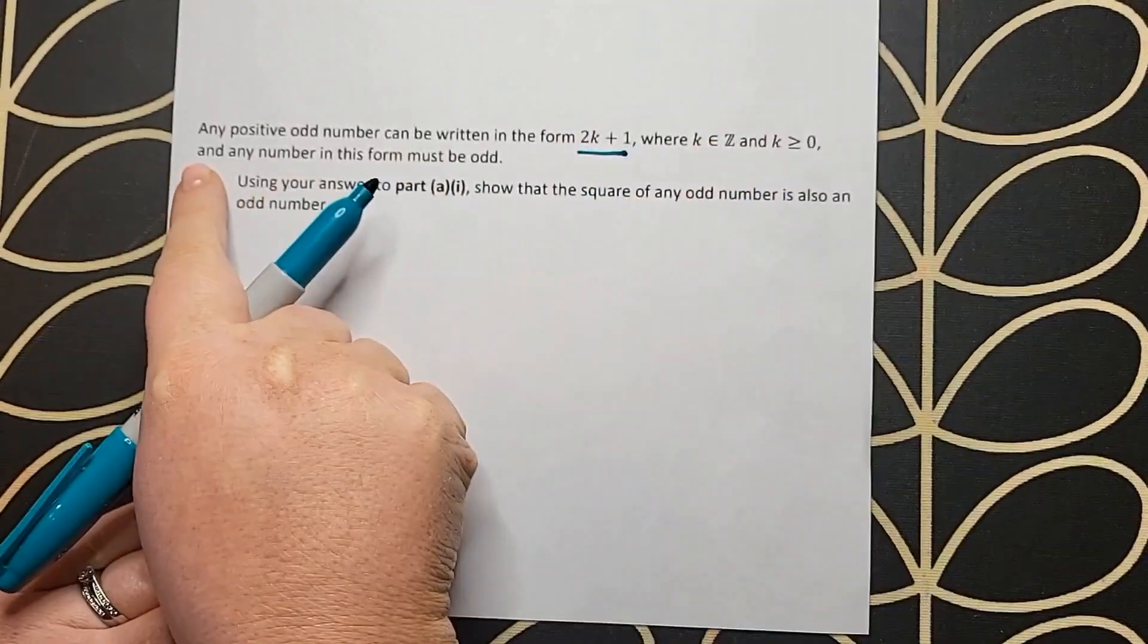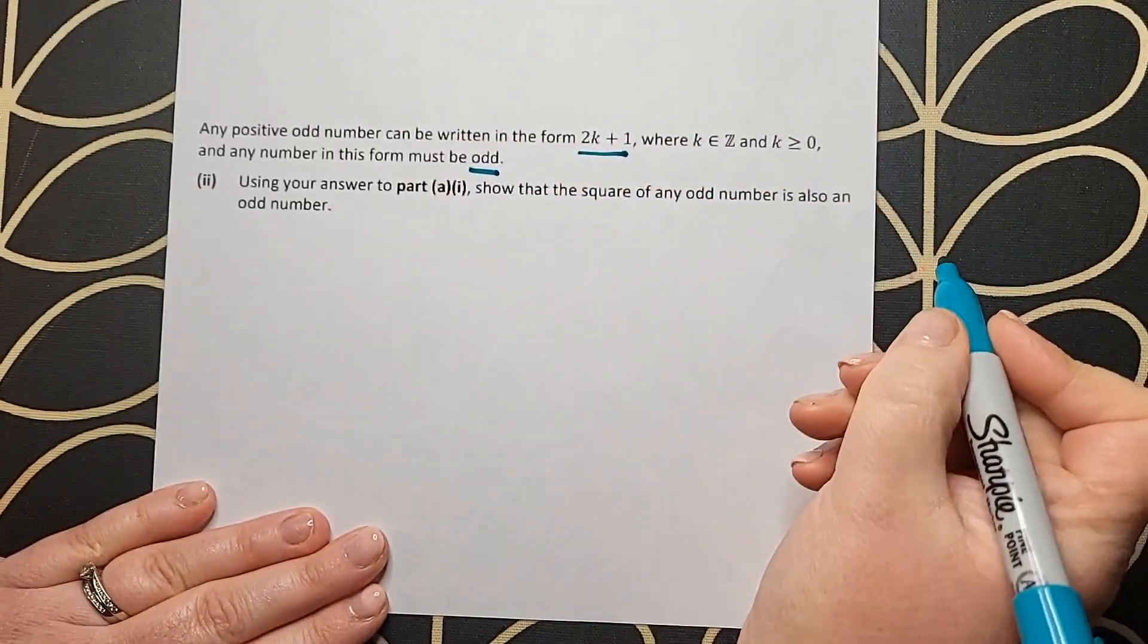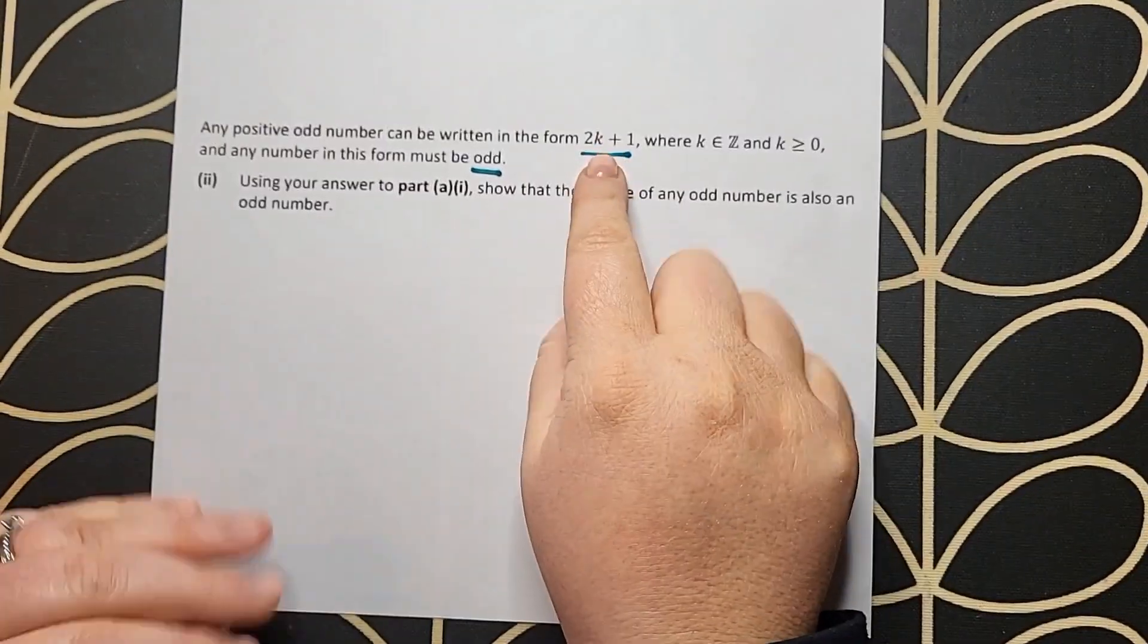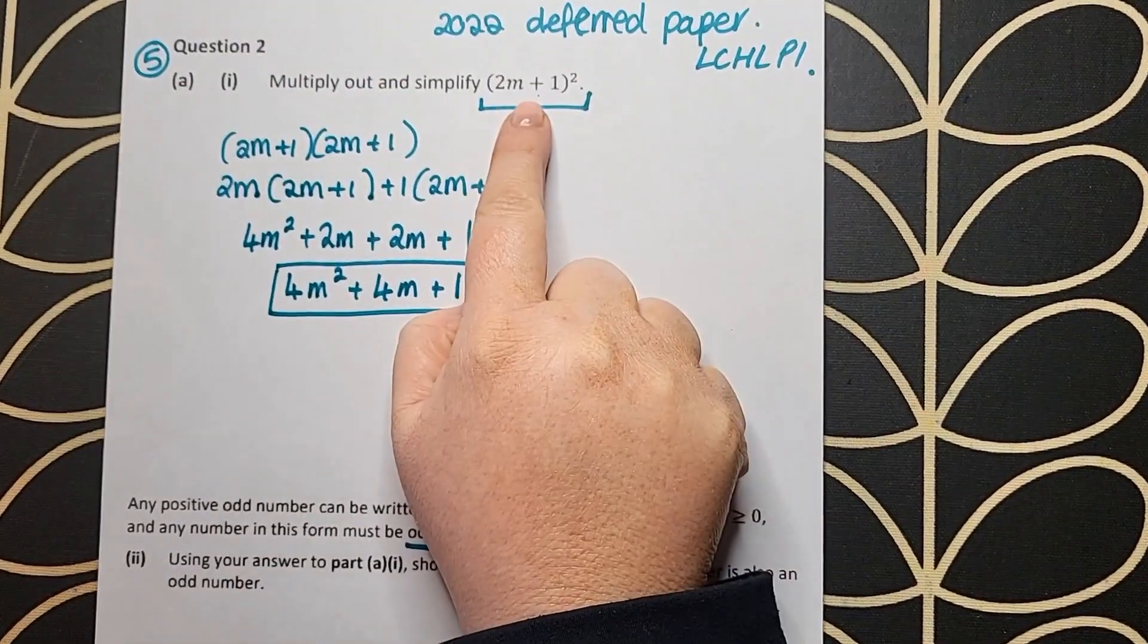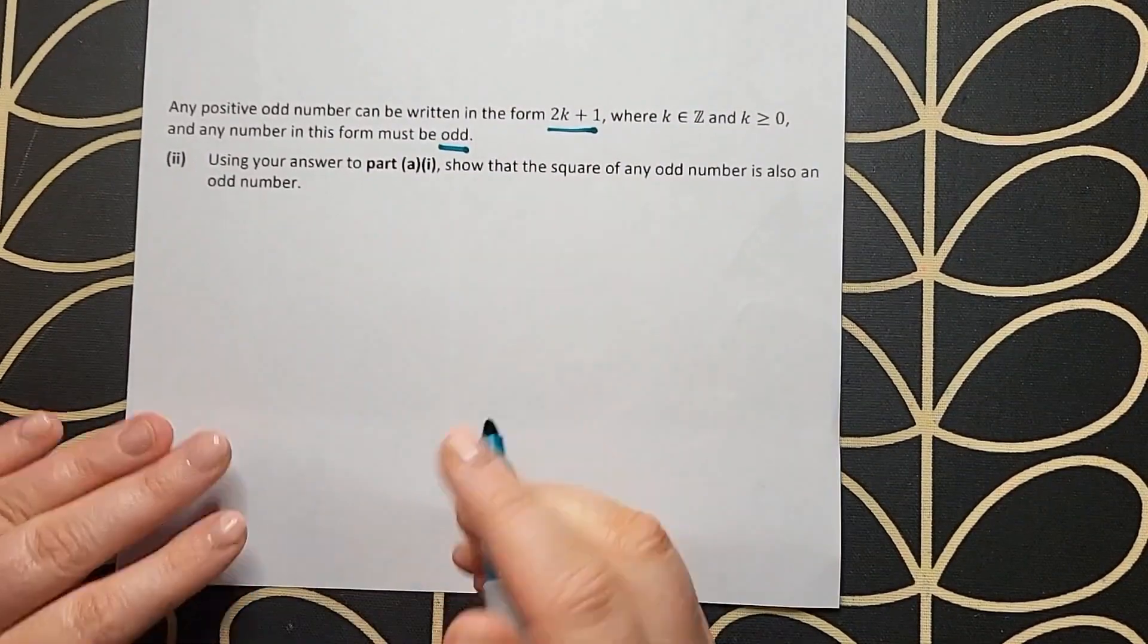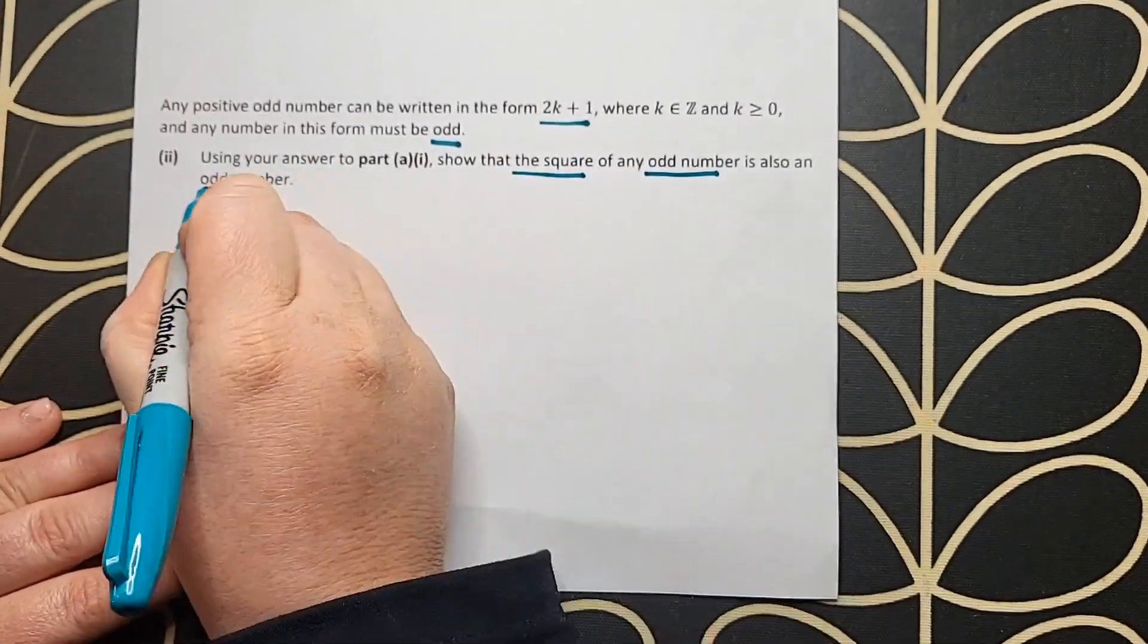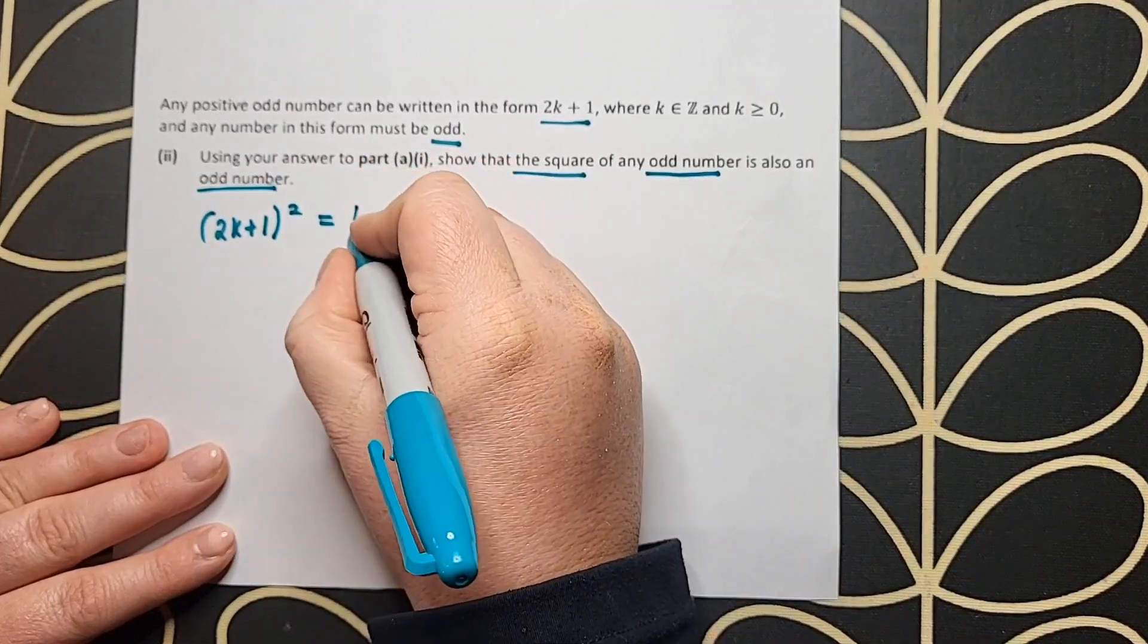In the second part, any positive odd number can be written in the form 2k + 1, where k is an element of the integers and k is greater than or equal to 0. Any number of this form must be odd. Using your answer to part I, show that the square of any odd number is also an odd number.